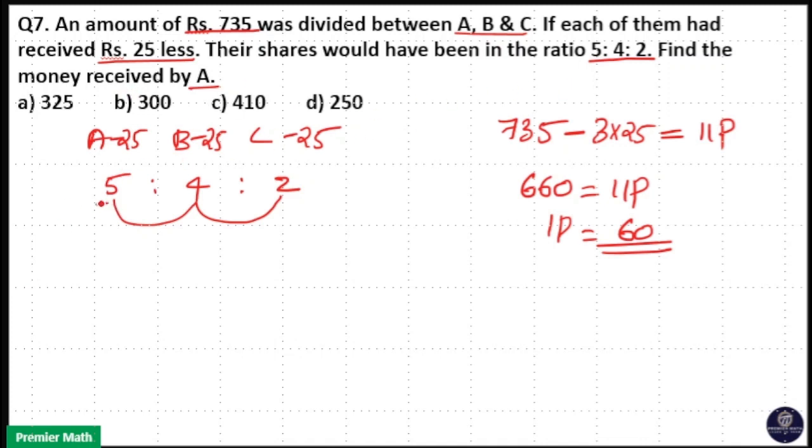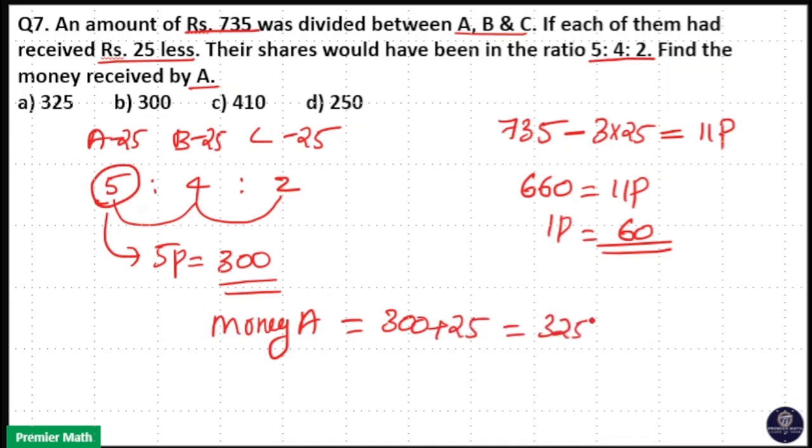We have to find the money received by A. 5 parts equals 5 into 60, that is 300. So money with A is equal to 5 parts plus 25, that means 300 plus 25 equals 325. Your answer is option A.